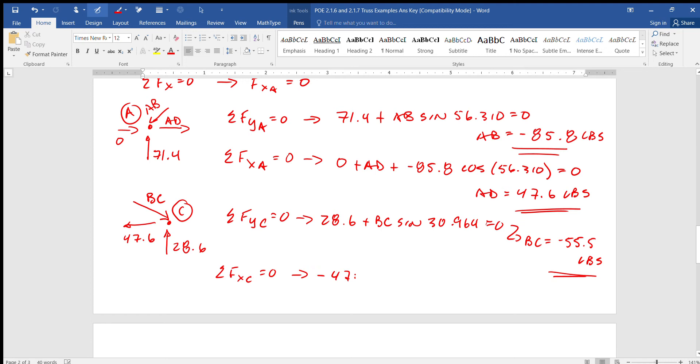And I say yeah, the sum around the X at C equals zero. So negative 47.6 plus 55.5 cosine of 30.964 equals zero and it better, and it does. So I check it to make sure it does.